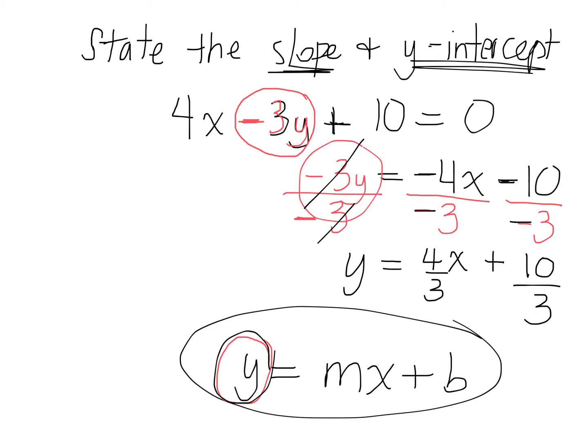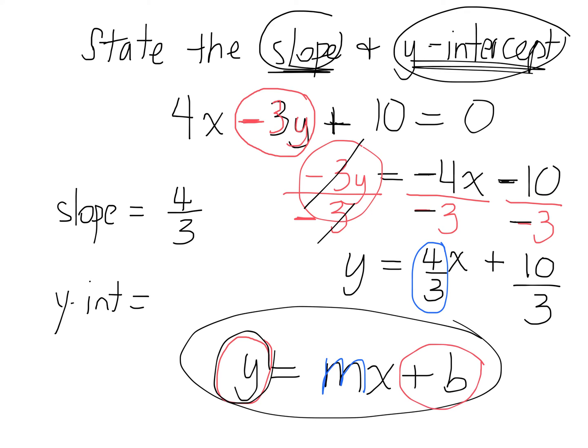The question said state the slope and state the y-intercept. What's the slope equal to? 4 over 3, the coefficient of x. Good. And what's the y-intercept equal to? The constant term, the number by itself, 10 over 3.